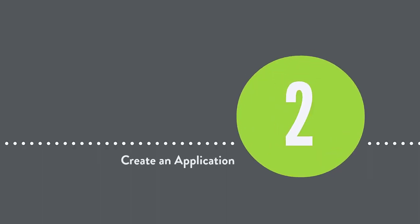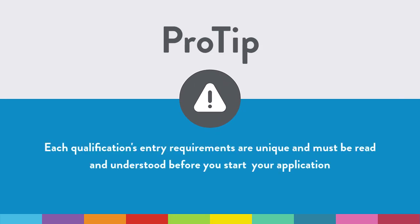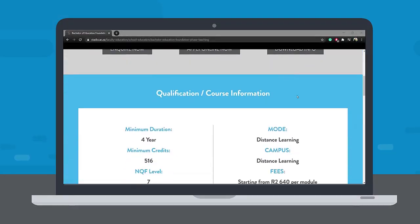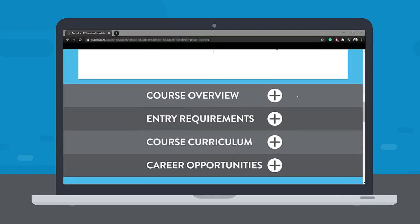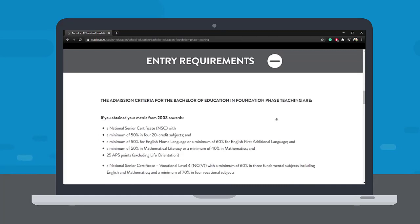Step 2: Create an application. Pro tip: each qualification's entry requirements are unique and must be read and understood before you start your application. On the website, navigate to your chosen qualification, scroll down and click entry requirements to read or download the necessary information prior to applying.